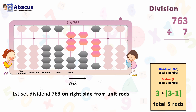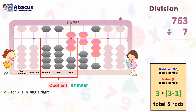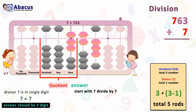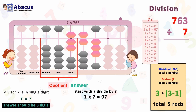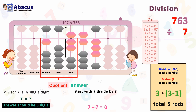As per the rule, the answer can be in three or two digits. Divisor 7 is single digit, so we compare the first digit of dividend 7 with divisor 7. Since dividend 7 and divisor 7 are equal, the answer should be in 3 digits. Now start with 7 divided by 7. In the table of 7: 1×7=7, which is exactly what we need. Set 1 on the hundreds rod. Now subtract 7 from the right side to track remainders: 7 minus 7 equals 0.